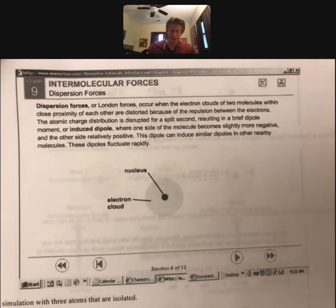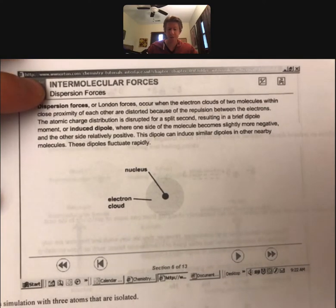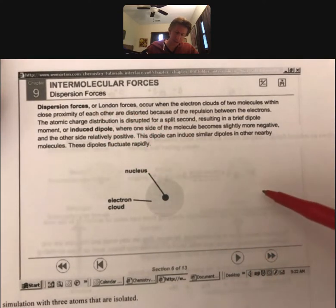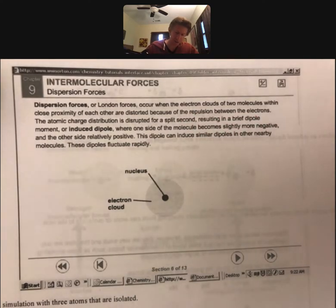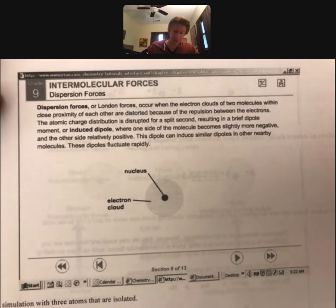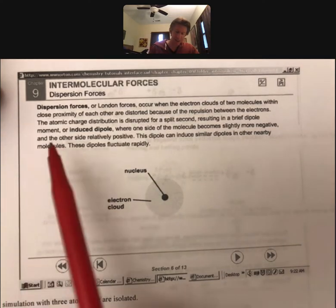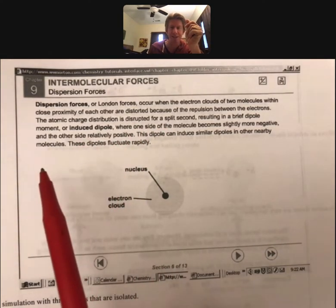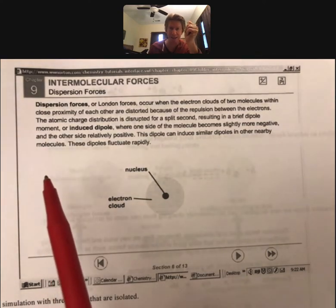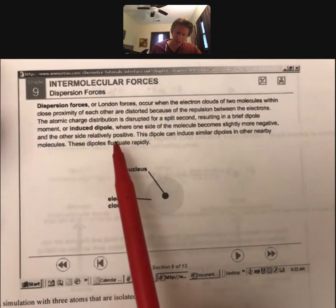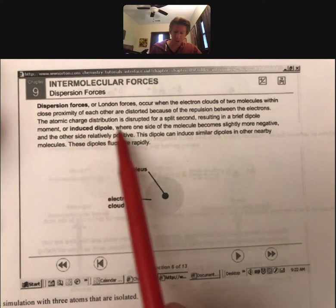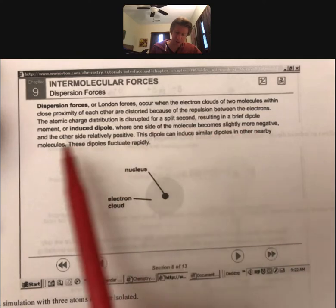It's the best for last in my opinion. This last one's going to be a discussion of dispersion forces, and they're also called London forces. They occur when the electron clouds of two molecules within close proximity of each other are distorted because of the repulsion between the electrons. The atomic charge distribution is disrupted for a split second, 1 times 10 to the negative 15th seconds, resulting in a brief dipole moment or induced dipole where one side of the molecule becomes slightly more negative than the other.